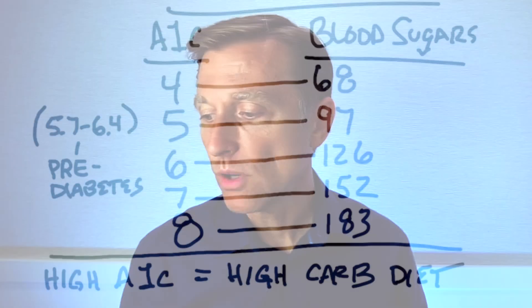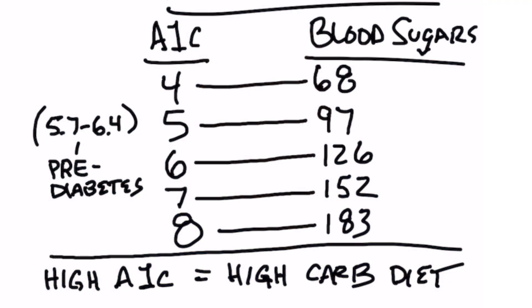For example, if you have an A1C of four, your blood sugars are roughly about 68. If you have an A1C of five, it's about 97 — but typically if it's lower fives, it could be like in the eighties. Higher fives like 5.8 or 5.9 would be like 98. Then you get six, which is the blood sugar of 126. And if you get seven, you have a blood sugar of roughly about 152. And if it's an eight, it's 183. And it keeps going higher and higher.